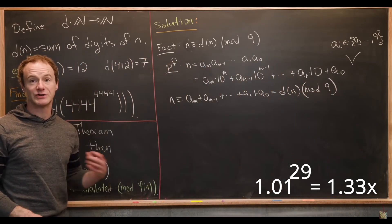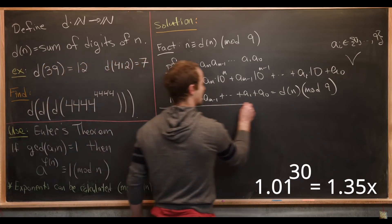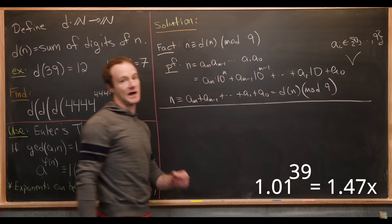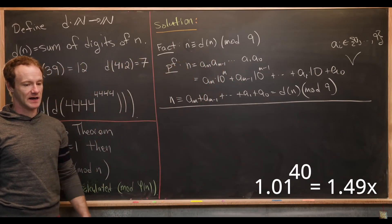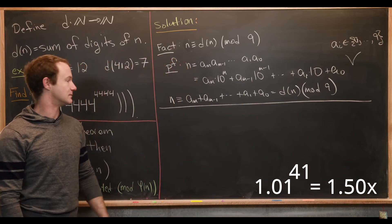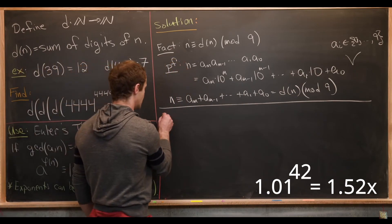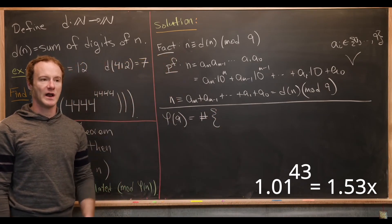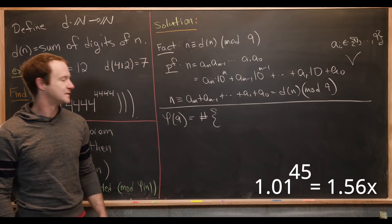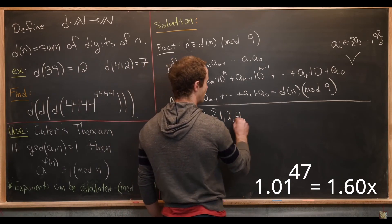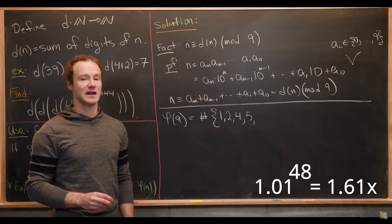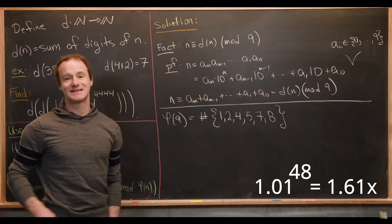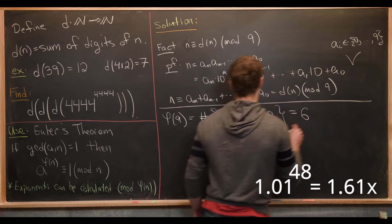Now that we have our motivation for working mod 9, let's calculate 4,444 to the 4,444 mod 9. First, phi of 9 is the count of numbers between 1 and 9 that are relatively prime to 9. We get 1, 2, 4, 5, 7, and 8 — that's 6 total numbers — so phi of 9 equals 6.